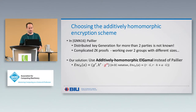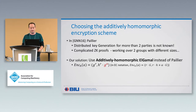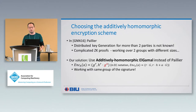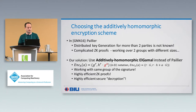Additively homomorphic El-Gamal is the same as standard El-Gamal, but instead of encrypting the message A directly, we encrypt G to the A. By doing this, we obtain an encryption scheme that is additively homomorphic. The advantage is that we work with the same group as in the signature, and all the zero-knowledge proofs are highly efficient. Secure distributed decryption is also very easy.